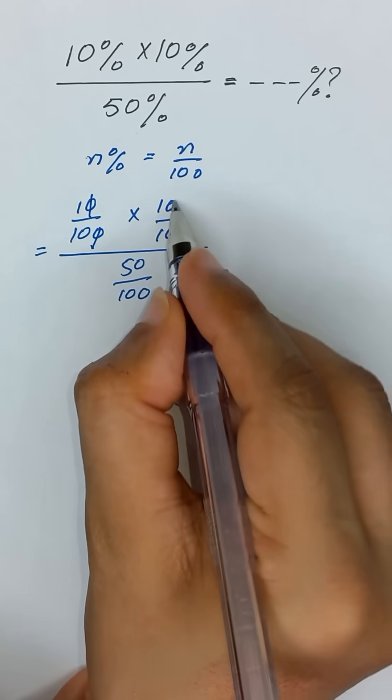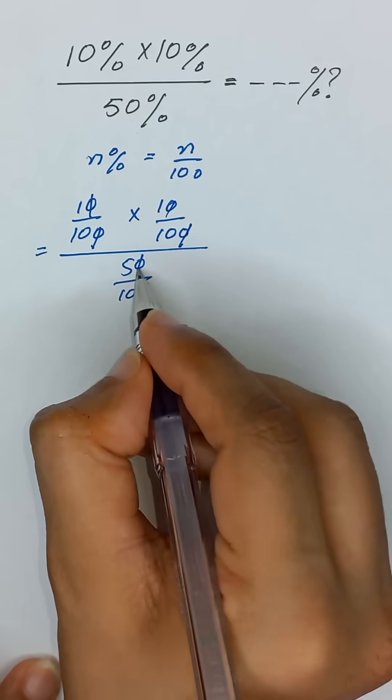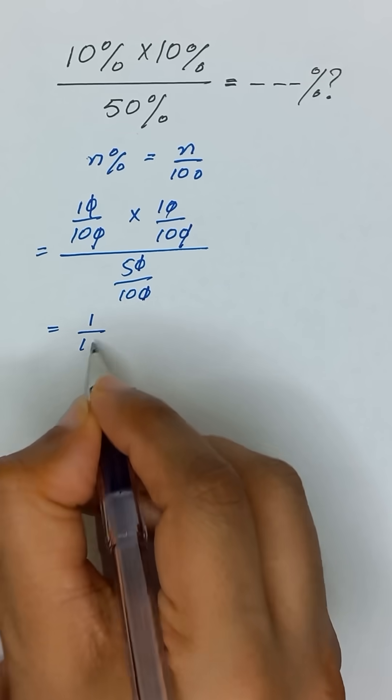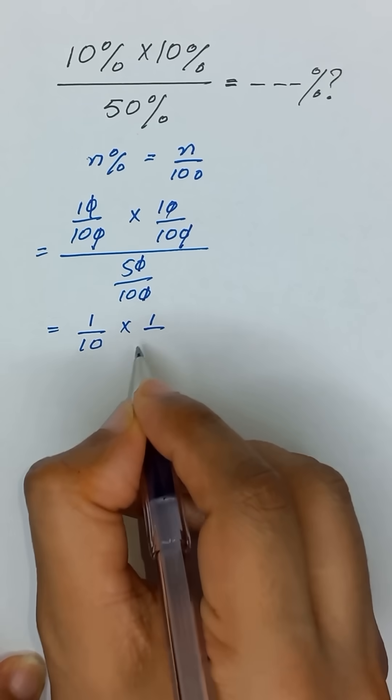This 0 and 0 will be cancelled out. This 0 and 0 will also be cancelled out and it will give us 1 divided by 10, multiply 1 divided by 10.